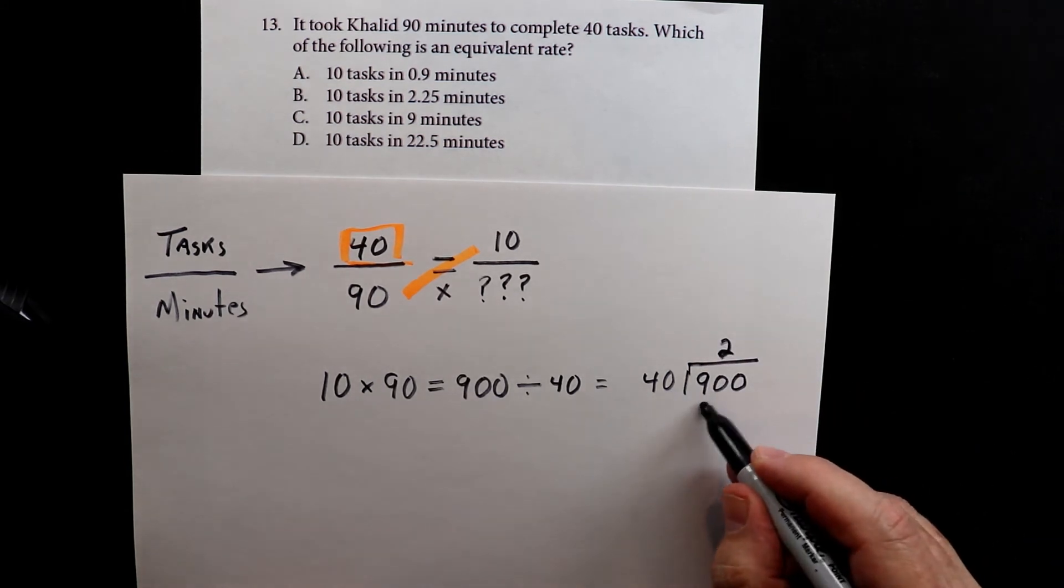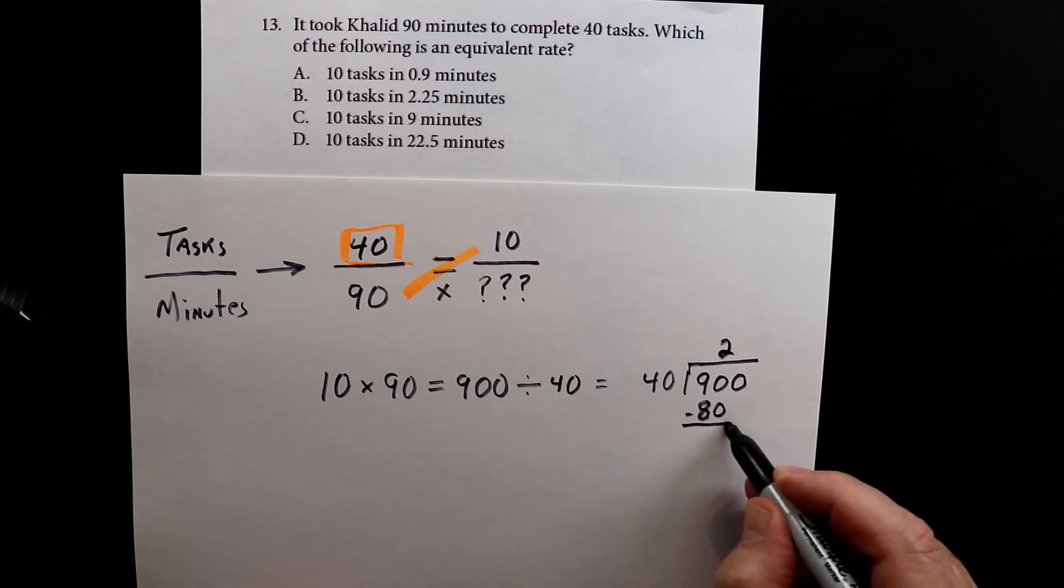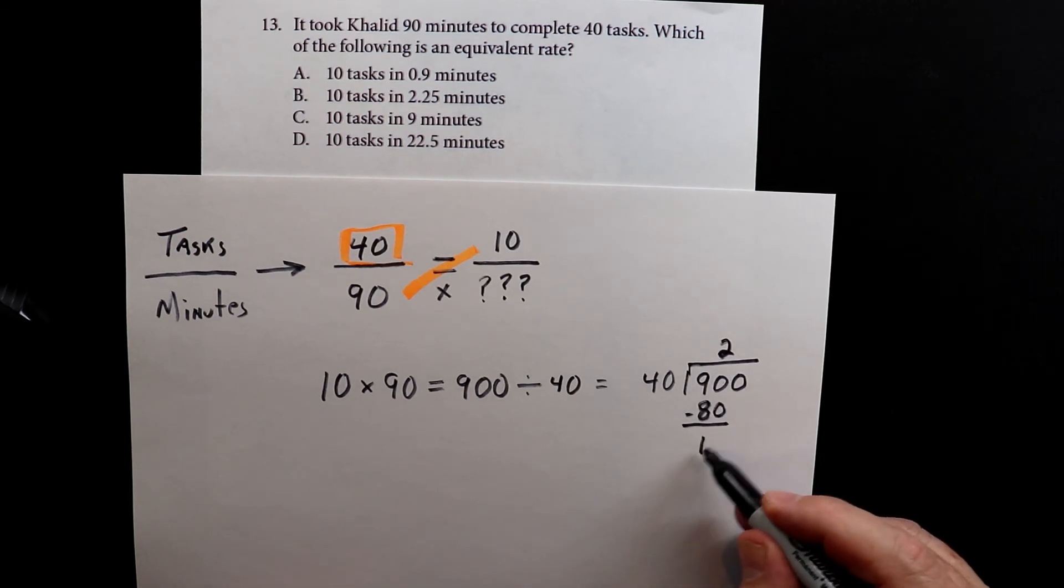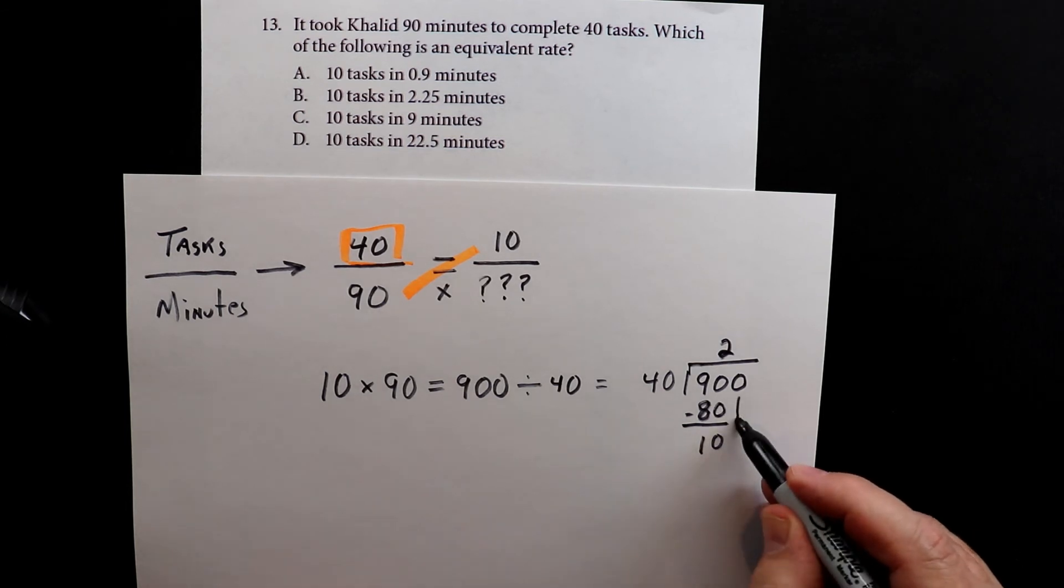2 times 40 is 80. 90 minus 80 is 10. I bring down the zero.